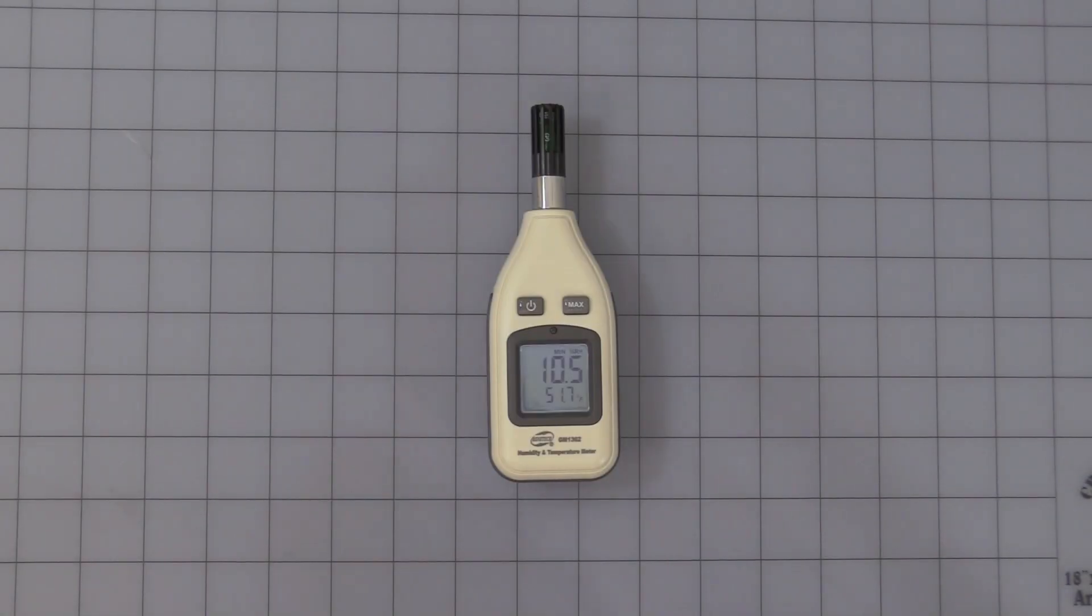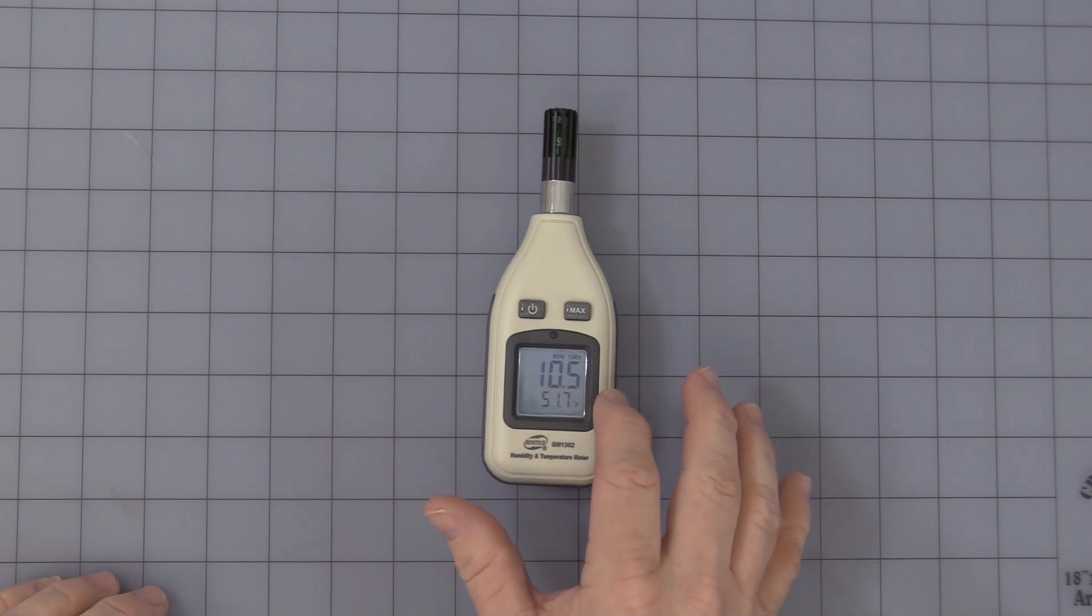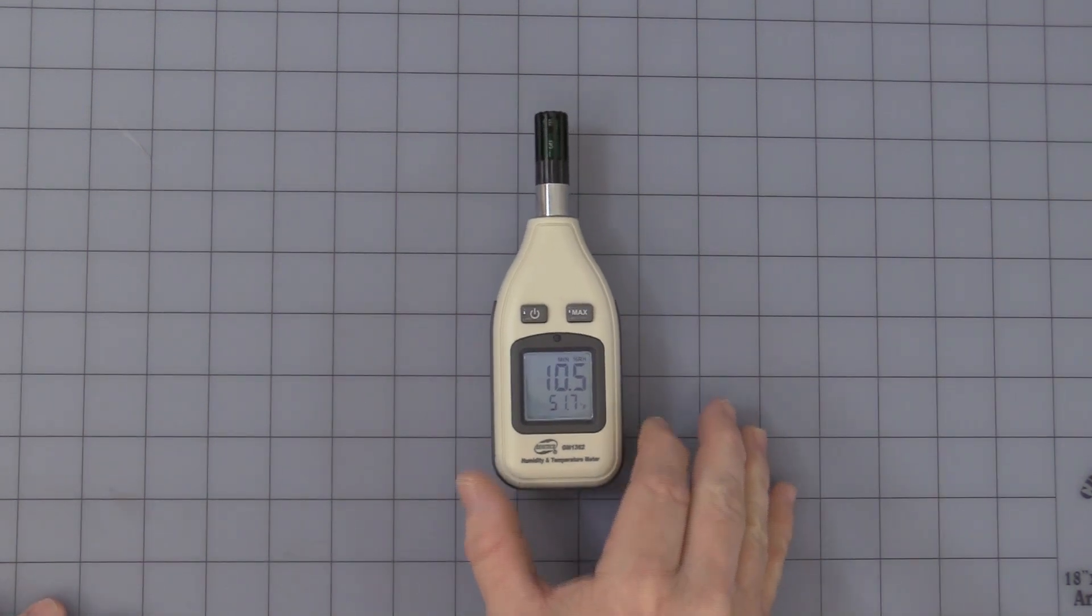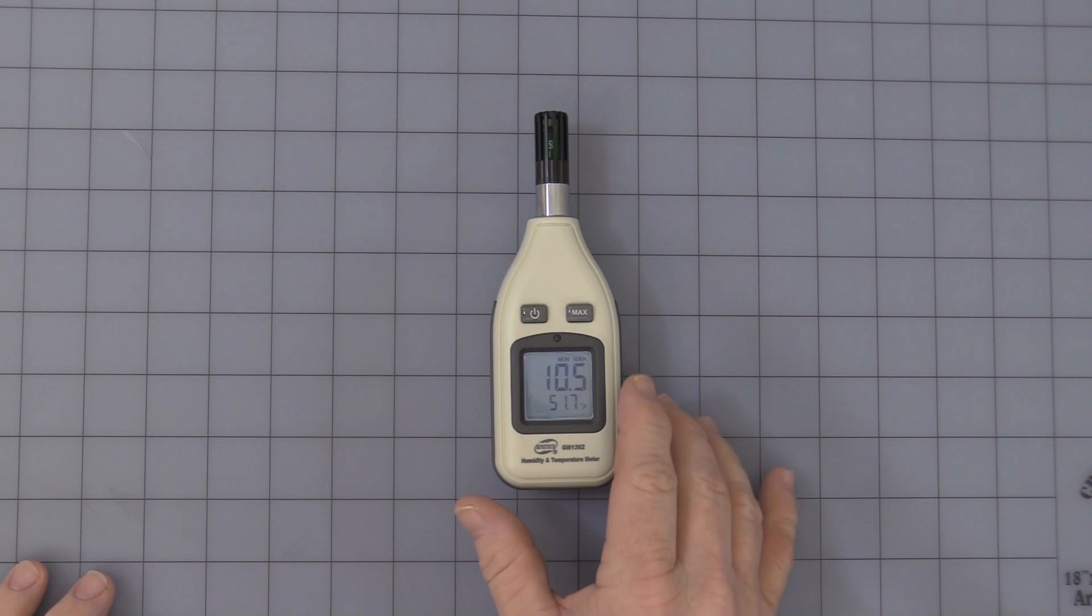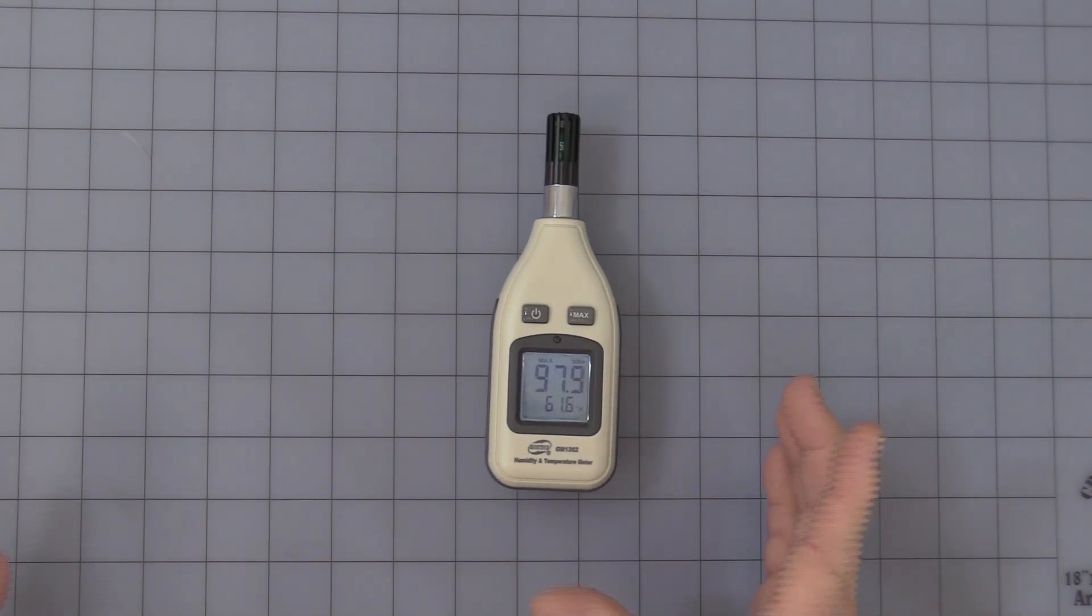Okay, now in the minimum mode, after spending a couple of minutes in the refrigerator, you can see the lowest relative humidity it recorded was 10.5 percent, temperature of 51.7 degrees Fahrenheit. So it will just continue to display that until you switch, hit the max again.